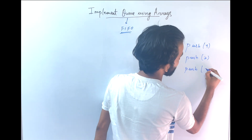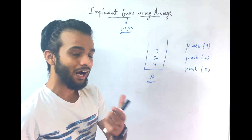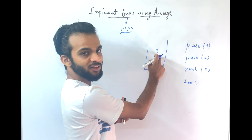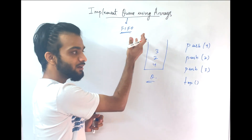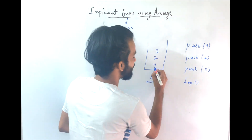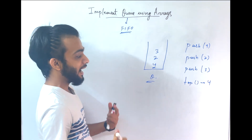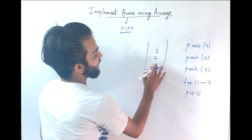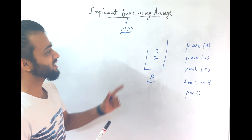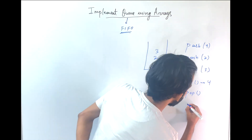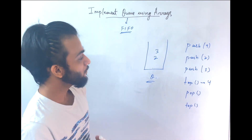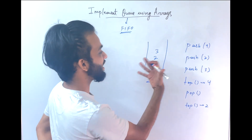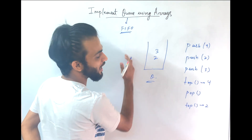After that, push 3 into the queue, so 3 will get in. But right after that, if I ask for the topmost element — since first in means the first inserted element was 4, so 4 becomes the topmost element. There is also the pop operation, which deletes the first-in element. So 4 gets deleted, and now the top returns 2. The traversal is in the first in, first out direction.